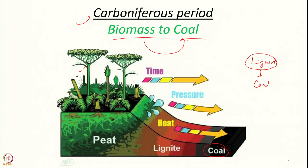After millions of years, evolution gave this magic chemical — lignin. This organic compound gives strength and structural stability to plants and trees. Even for smaller plants or shrubs, it gives structural stability to withstand heavy wind, animals, or any impact. Lignin became universal for most big plants and trees.